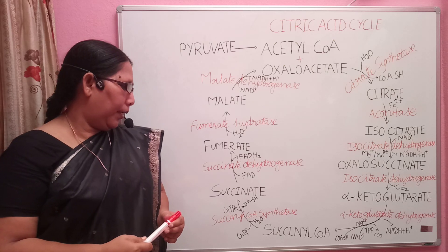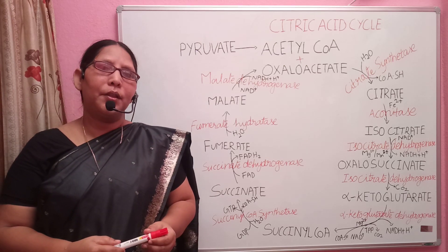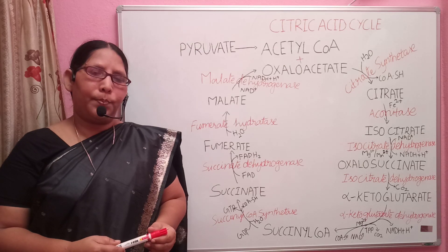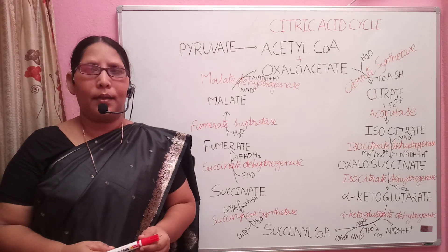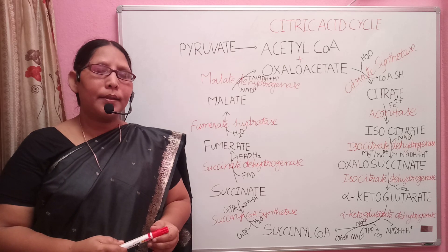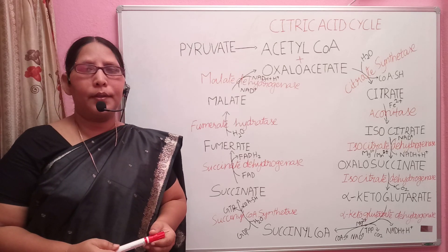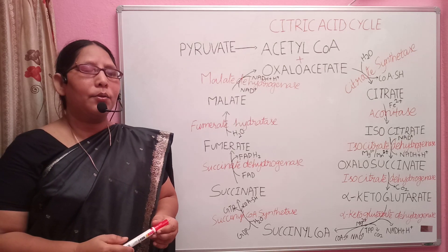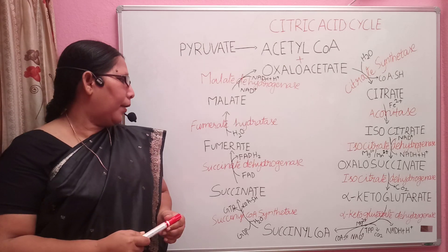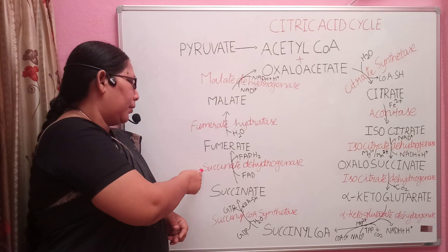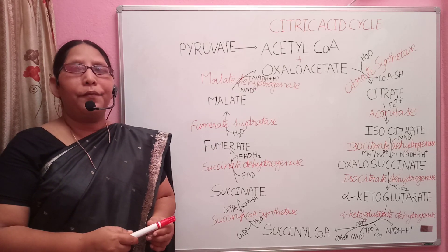From succinyl coenzyme A, succinate is formed with the formation of GTP, which stands for guanosine triphosphate, from guanosine diphosphate. This reaction is catalyzed by succinyl coenzyme A synthetase, also known as succinate thiokinase. The succinyl coenzyme A is mainly used for the synthesis of heme. From succinate, fumarate is formed in the presence of succinate dehydrogenase, and FAD is reduced to FADH2.